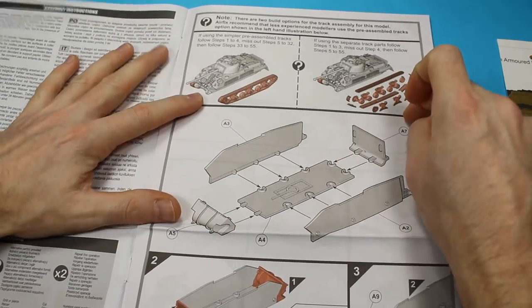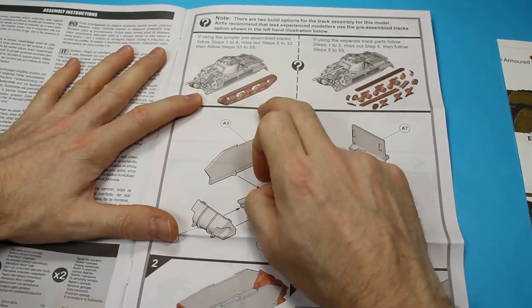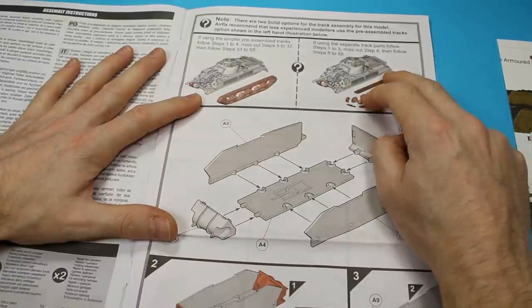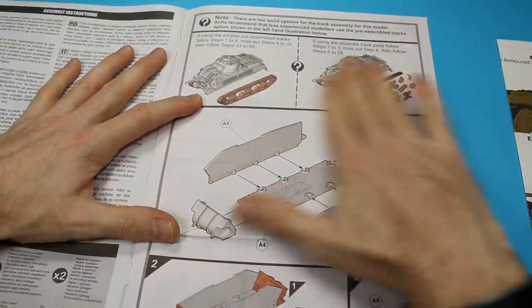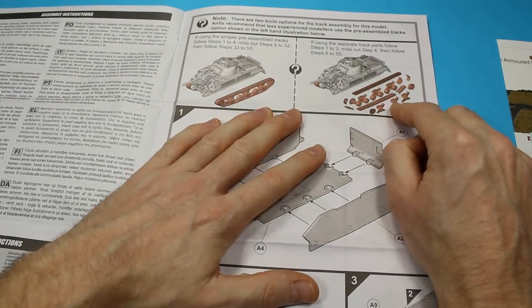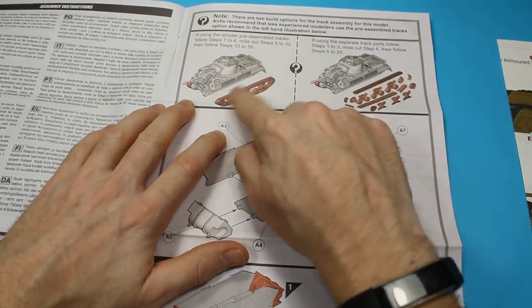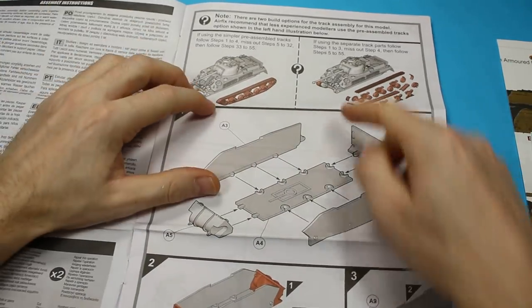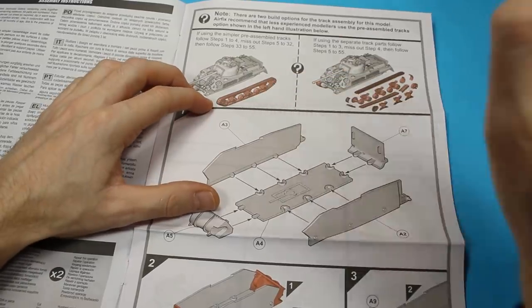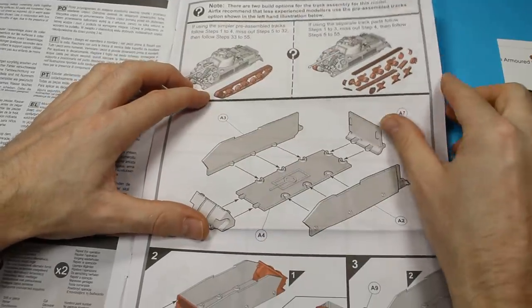So what we've got here is two different options for the running gear. The build-up of the superstructure, the turret, and the lower hull is the same throughout, but you've got link and length tracks with separate bogeys, or you've got it all molded as one. You'd instantly think, right, okay, well, if the detail's the same, let's just go for that. But there's something we need to look at as we go forward.